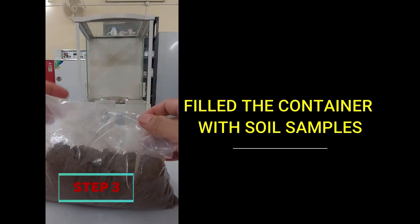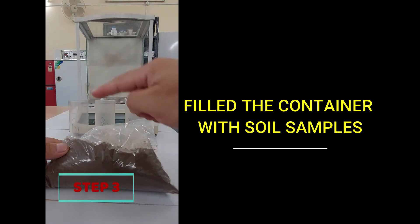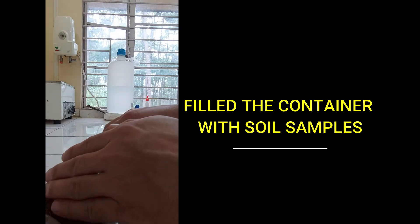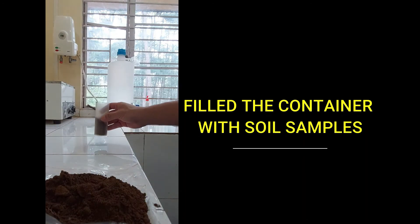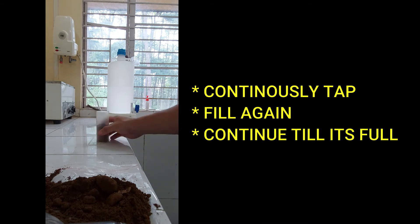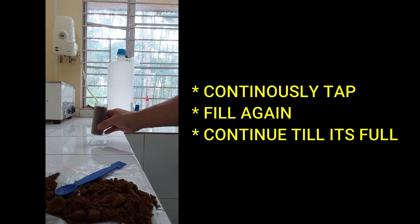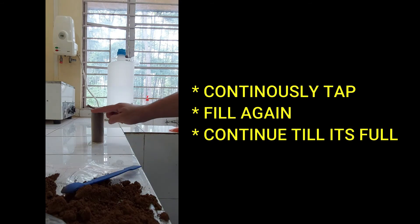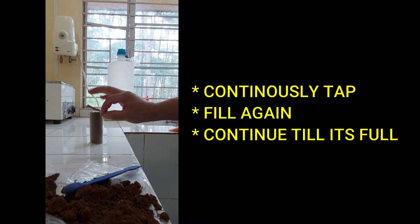Then fill the container with the air-dried sample which has been passed through a 2mm sieve, and then continuously tap the container for about 10 to 20 times. This process is continued till the container is filled with soil samples.